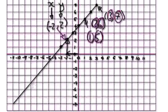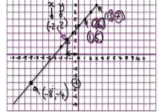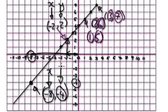Let's look at this one here. The coordinates here would be minus 8, minus 4. So remember, this is your x because you've got to go across first. This here is your x, and this here is your y value. So this one here is minus 4.